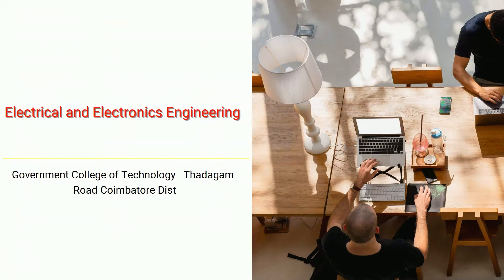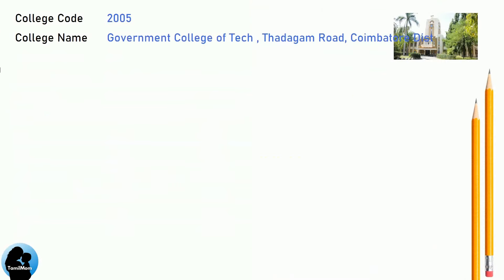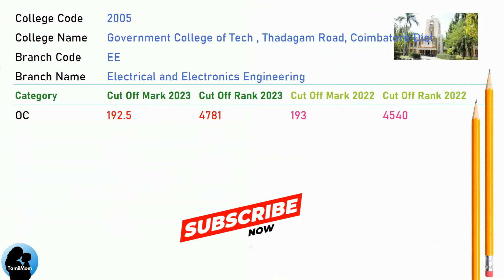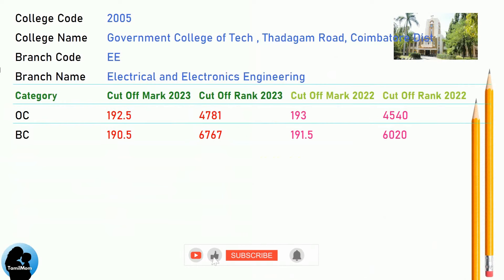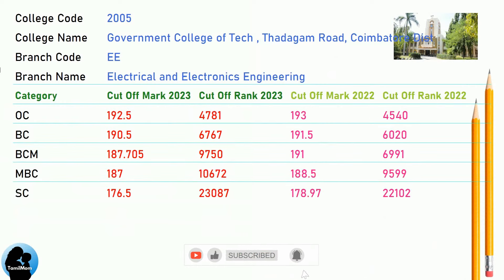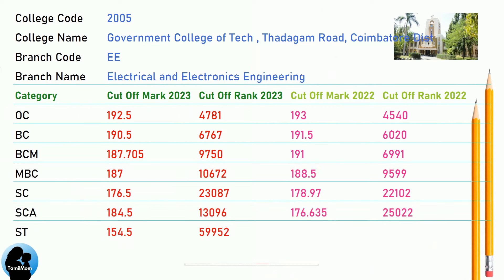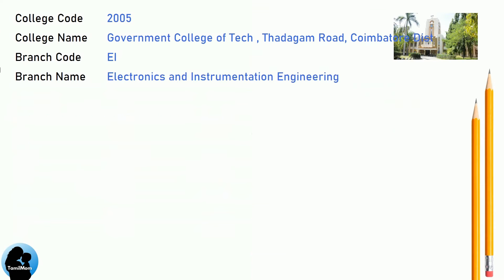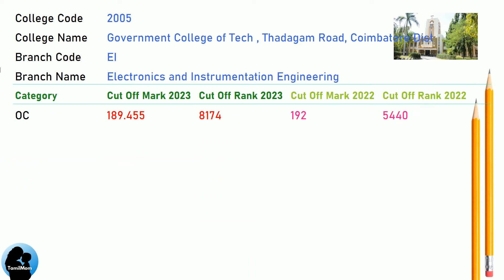Government College of Technology, Thadagam Road, Coimbatore District — cut-offs for Electrical and Electronics Engineering, and cut-offs for Electronics and Instrumentation Engineering.